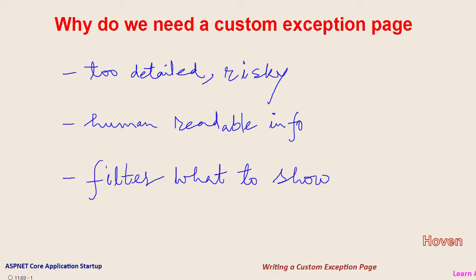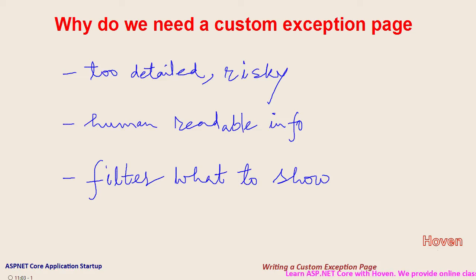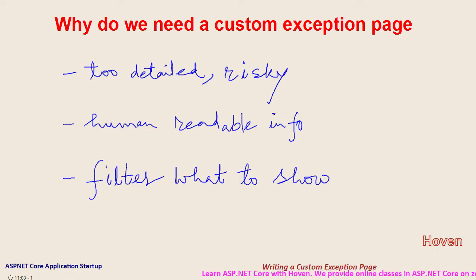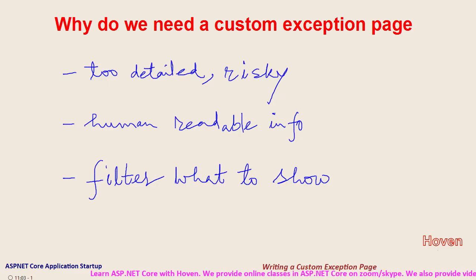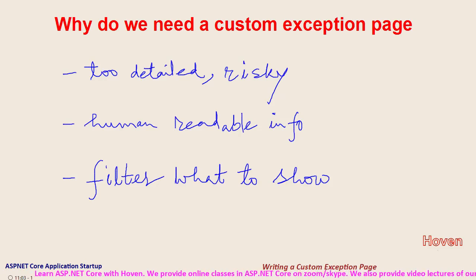Thirdly, a custom exception page allows us to filter the information before displaying it. We can choose to show some information while hiding the more sensitive part of it. Let us now see how to configure a custom error page.